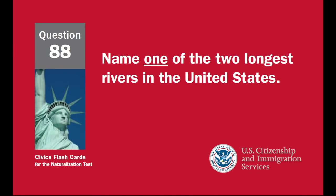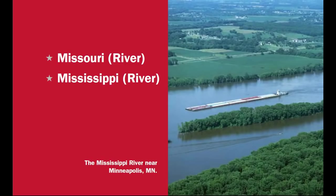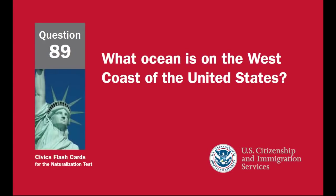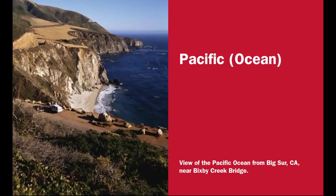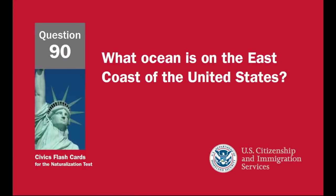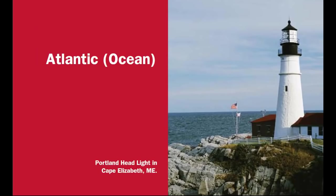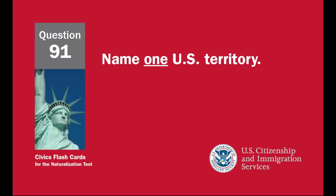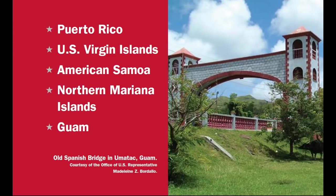Name one of the two longest rivers in the United States: Missouri River, Mississippi River. What ocean is on the west coast of the United States? Pacific Ocean. What ocean is on the east coast of the United States? Atlantic Ocean. Name one U.S. territory: Puerto Rico, U.S. Virgin Islands, American Samoa, Northern Mariana Islands, Guam.